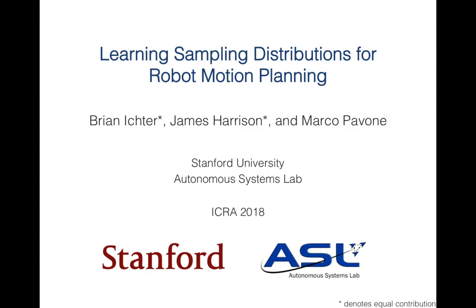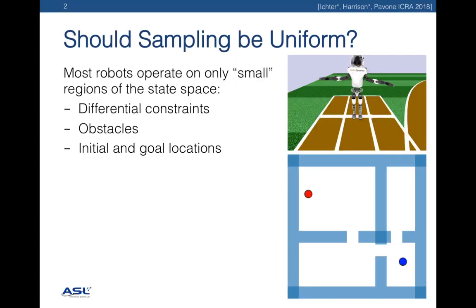Sampling-based robotic motion planning algorithms have emerged as a very successful paradigm for high-dimensional, complex, and even differentially constrained systems. These algorithms maintain an implicit representation of the state space built on a bed of probing samples placed uniformly over the environment.